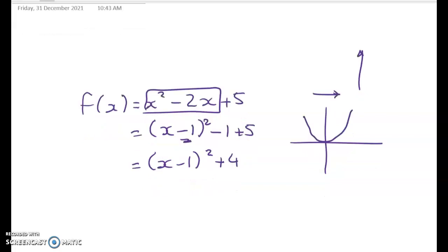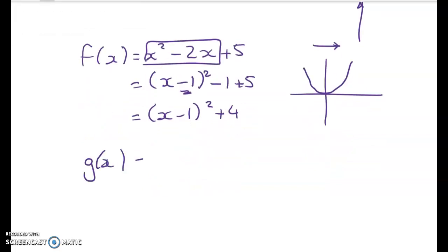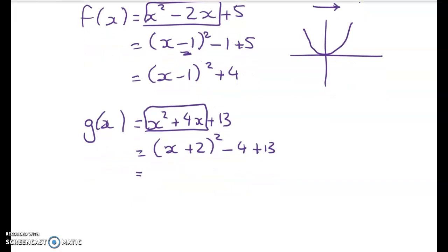Now we're going to look at g(x), and g(x) is x² + 4x + 13, and that works out to be (x + 2)² take away 4 plus 13. If you're not really confident with that, I've done a video for level 2 maths on completing the square, so go search that one up. That gives me (x + 2)² + 9. So that's the first part done.